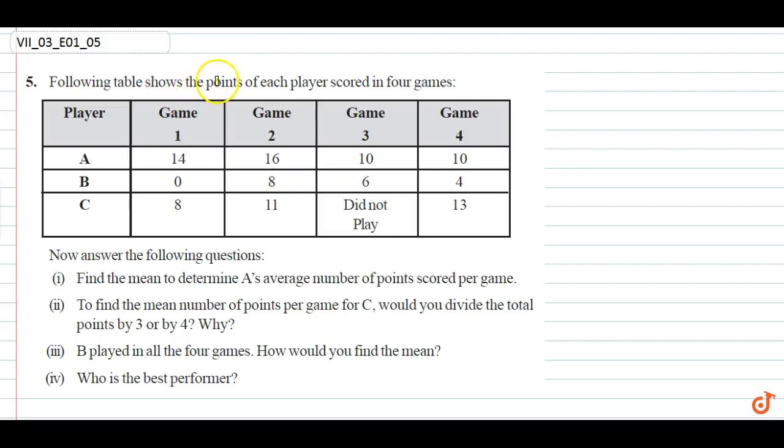The question says the following table shows the points of each player scored in four games: A, B, C. Now answer the following questions. Find the mean to determine A's average number of points scored per game. To find the mean number of points per game for C, would you divide the total points by 3 or by 4? If B played in all four games, how would you find the mean? Who is the best performer?